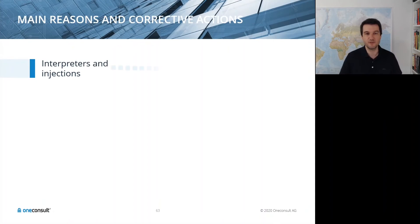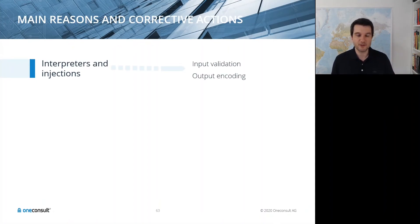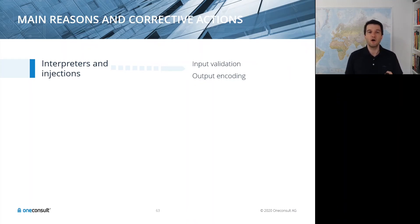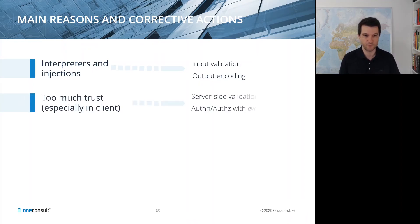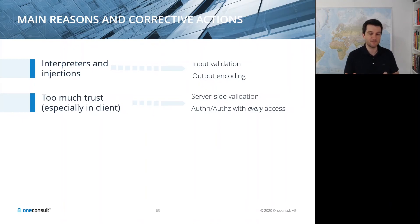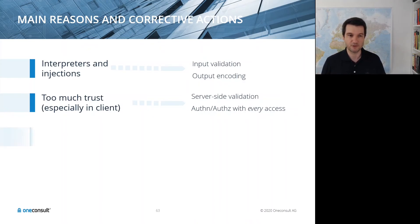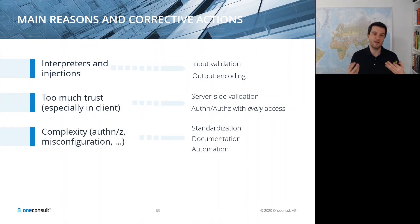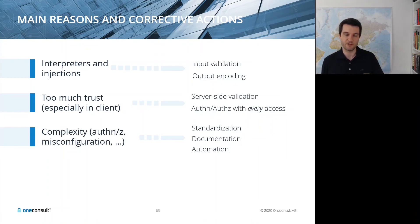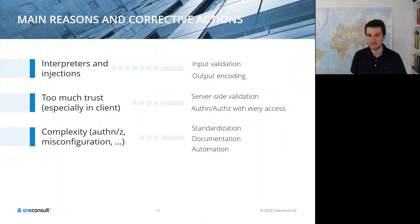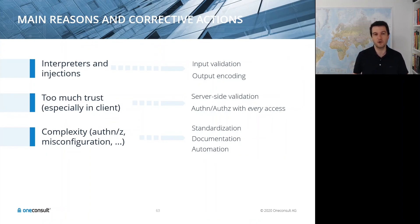In conclusion, the main reasons for security weaknesses and corrective actions: to prevent injections, do thorough input validation regardless of source — even from trusted systems — and encode output suitable for its context. Do not place too much trust in client applications; always ensure security-critical validation steps take place server-side, and with every access to functions and objects, verify the request is authorized. To address growing system complexity, introduce standardization — for example, one platform for identity and access management — document design decisions and configurations, and automate as much as possible.